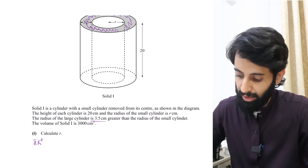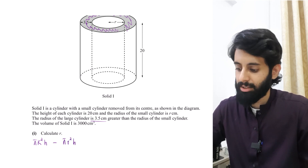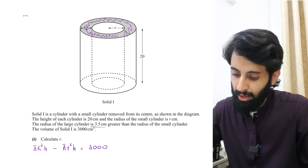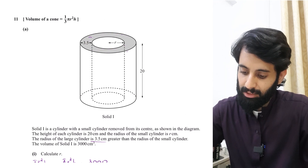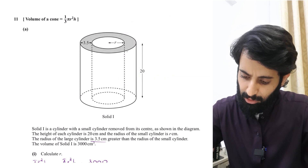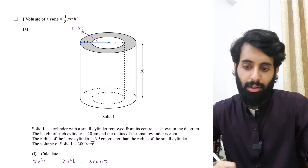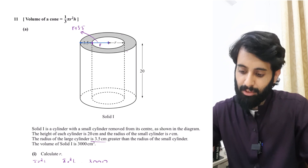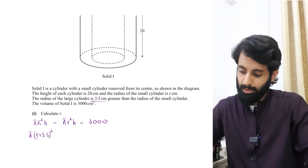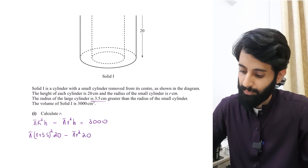We're going to compute pi R² h (capital R for the larger radius) minus pi r² h (lowercase r for the small cylinder), and set that equal to 3000. The radius of the larger cylinder is r plus 3.5. So we have: pi(r + 3.5)² × 20 minus pi r² × 20 = 3000, since both cylinders share the same height of 20.